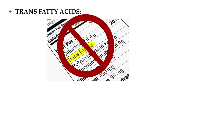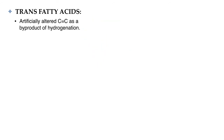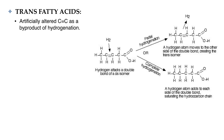Health Canada actually banned artificial trans fats, making it illegal for manufacturers to add them to any food sold in Canada. This ban was phased in starting in 2018, ending in September of 2020. When we talk about trans fats, we are referring to fats that have artificially altered double bonds, altered by a process called hydrogenation.